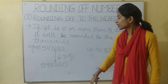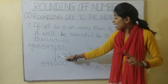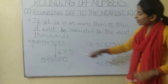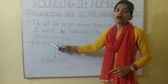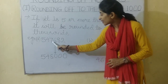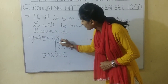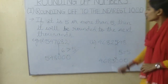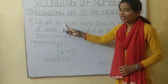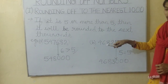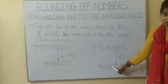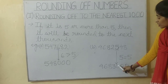But if it is 5 or more than 5, then it will be rounded to the next thousand. Look at this example. The hundreds digit is 6, and 6 is bigger than 5, so it will be rounded to the next thousand. The thousands digit is 7, so 7000 will become 8000. The last three digits become 0, 0, 0 — so the answer is 548000. Now look at example B. The hundreds digit is 5, and if it is 5, then also it will be rounded to the next thousand. Here 2000 rounds to 3000. So the answer will be 468300.